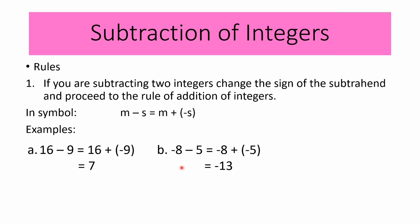For example letter B, we have negative 8 minus 5. Copy the minuend, which is negative 8, change subtraction to addition, and get the opposite sign of 5, which is negative 5. Following the rule for addition of integers, negative 8 plus negative 5 equals negative 13. Therefore, negative 8 minus 5 is equal to negative 13.